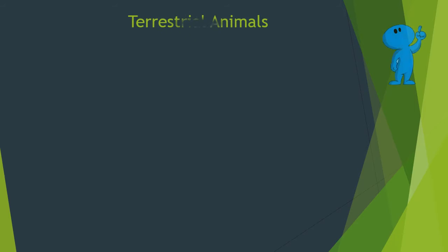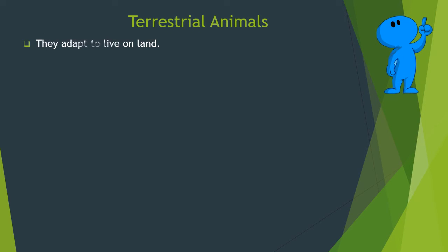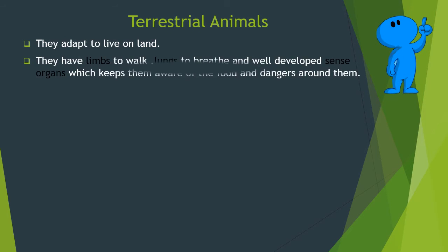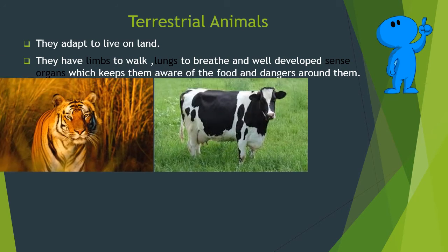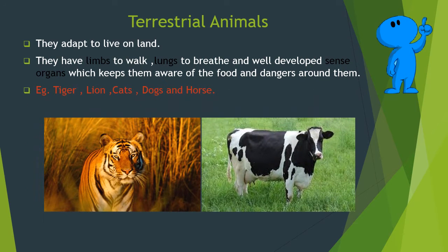Terrestrial animals adapt to live on land. They have limbs to walk, lungs to breathe, and well-trained sense organs which keep them aware of the food and dangers around them. For example: tiger, lion, cats, dogs, and horse.